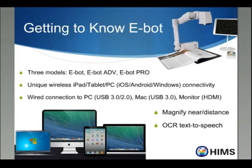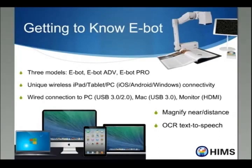There are three different models of eBot: the eBot, the eBot Advanced, and the eBot Pro. The eBot and the eBot Advanced look the same. The primary difference between the basic eBot and the eBot Advanced is that the Advanced model has optical character recognition. The OCR on the eBot Advanced captures whatever is under the camera — what you see is what you get — so it will not capture the entire page, only what is visible under the camera.